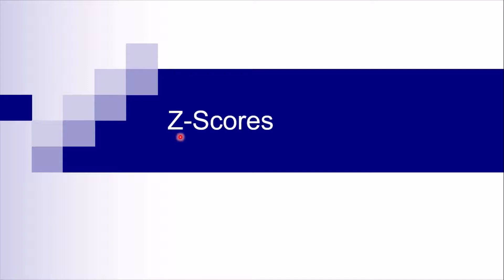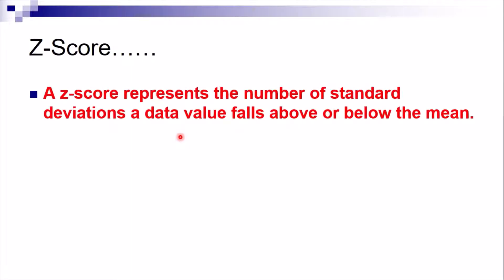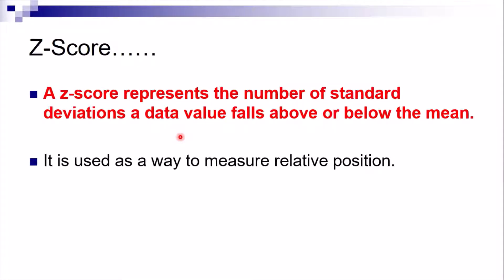Hello, good day. In this tutorial video you will learn about z-scores, which are also sometimes called standard scores. The z-score represents the number of standard deviations a data value falls above or below the mean. It is used as a way to measure relative position.